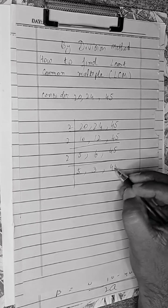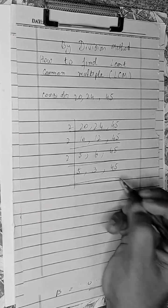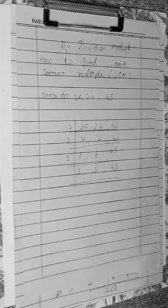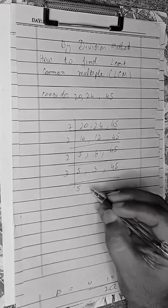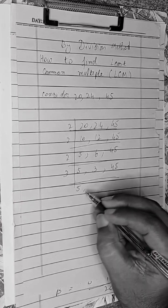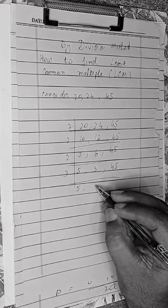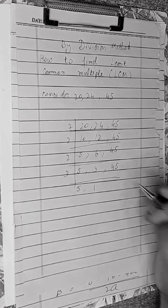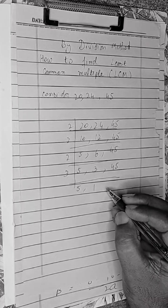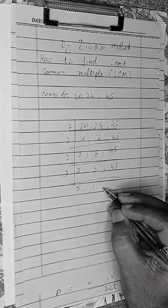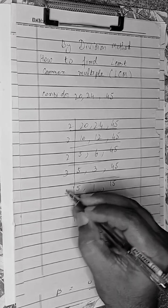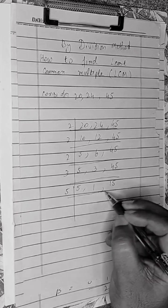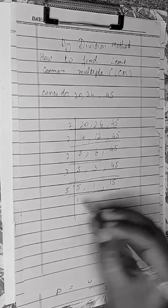Now we have 3, we can divide. 5 will remain the same, 3 divided by 3 is 1, and 45 divided by 3 is 15. Now we have 5.